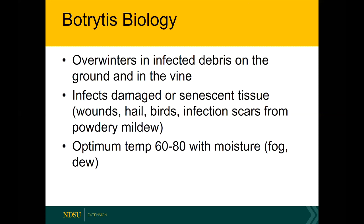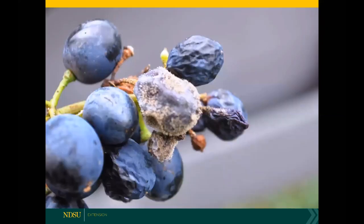Botrytis's optimum temperature is from 60 to 80 degrees with moisture. Here is a close-up of a berry with botrytis — without those spores being present it could be black rot, but when you see that grayish-brown fuzzy sporulation, that tips you off that you're dealing with botrytis.